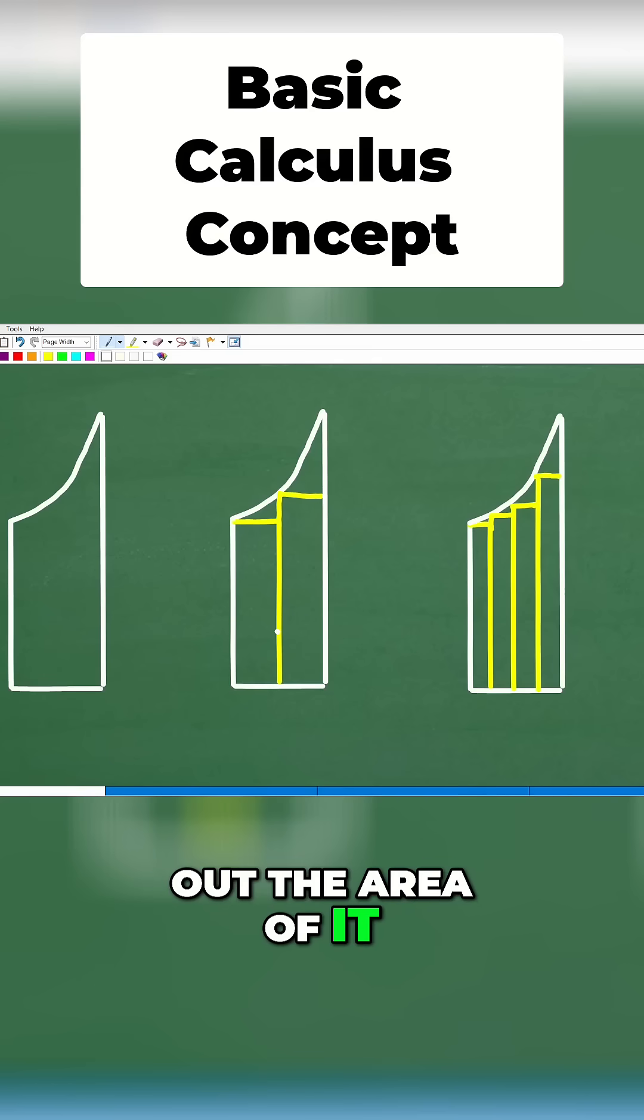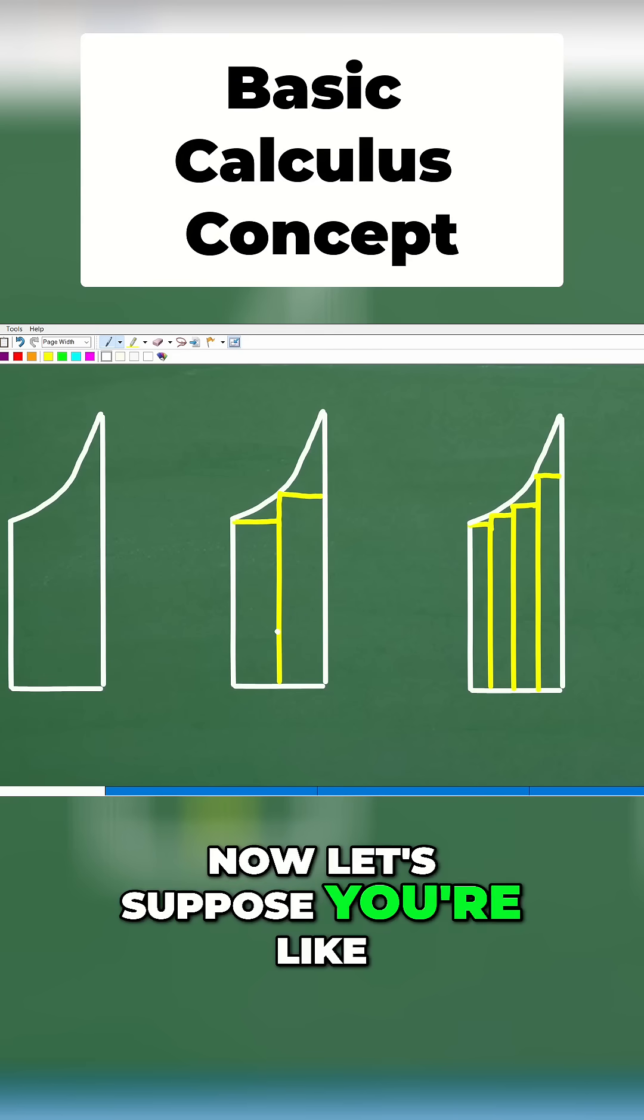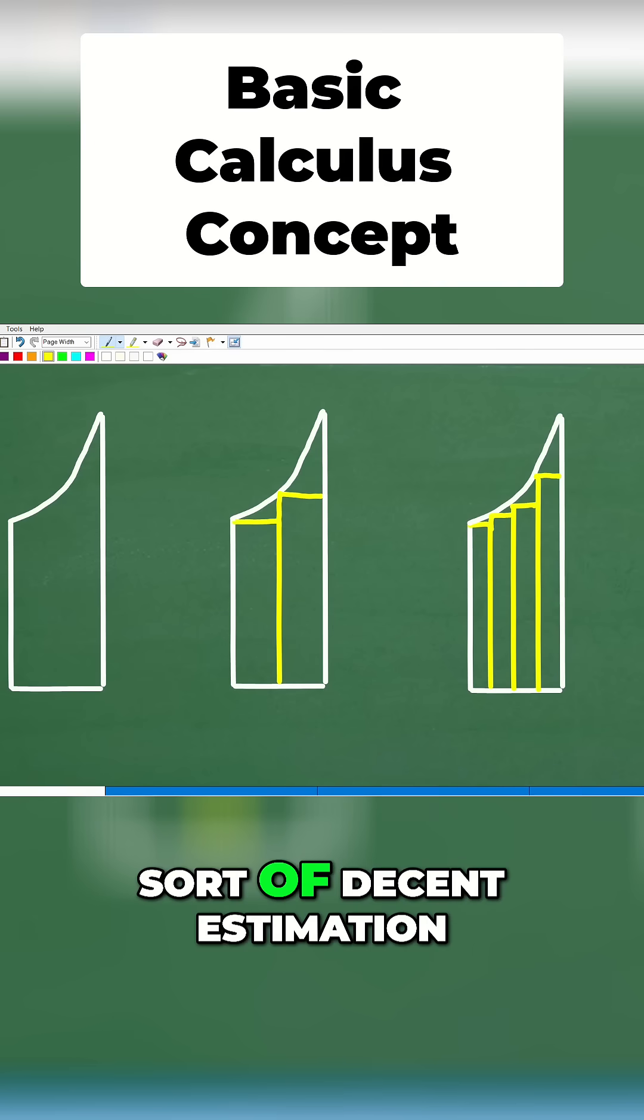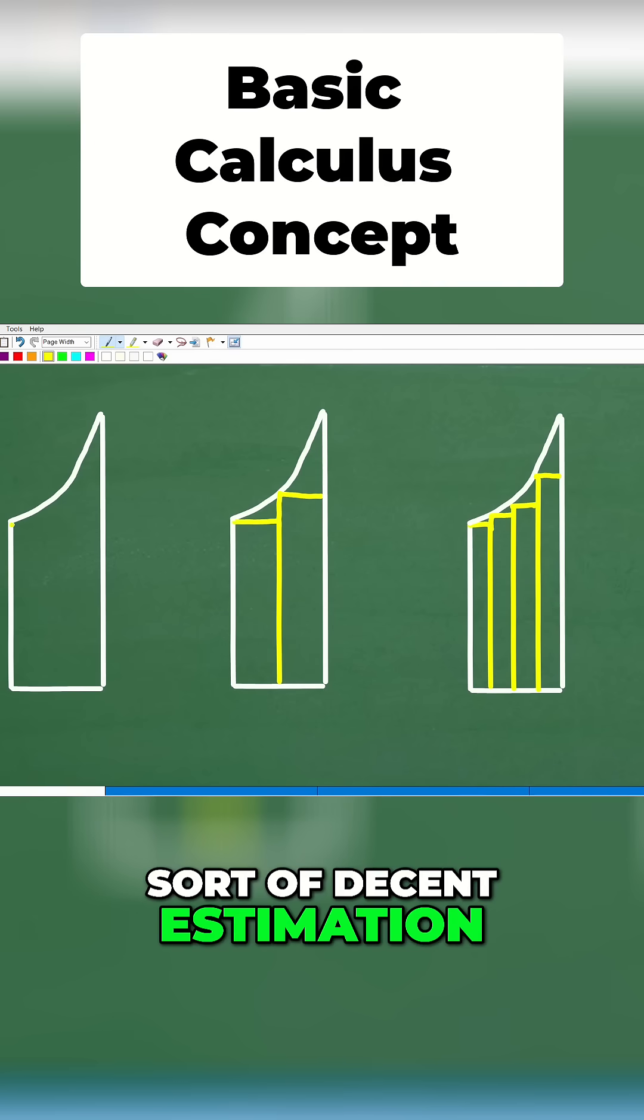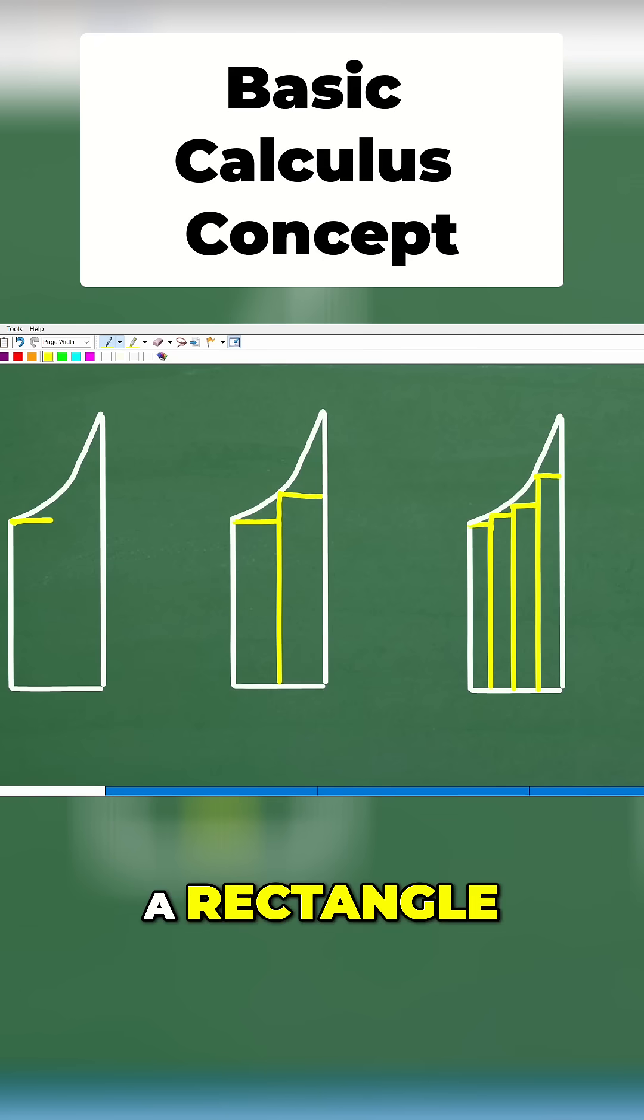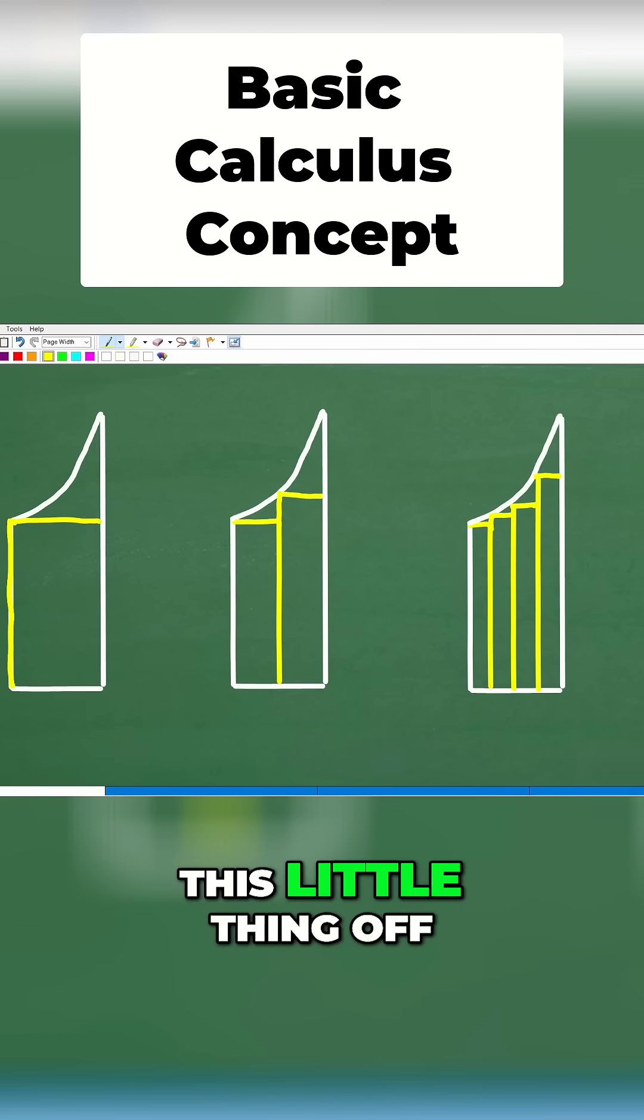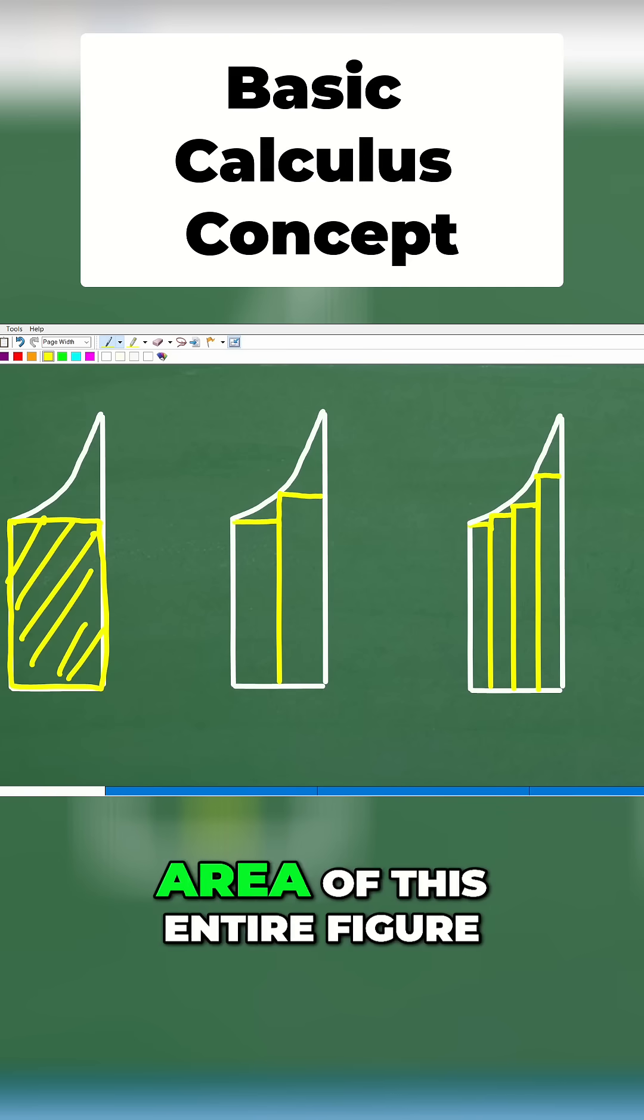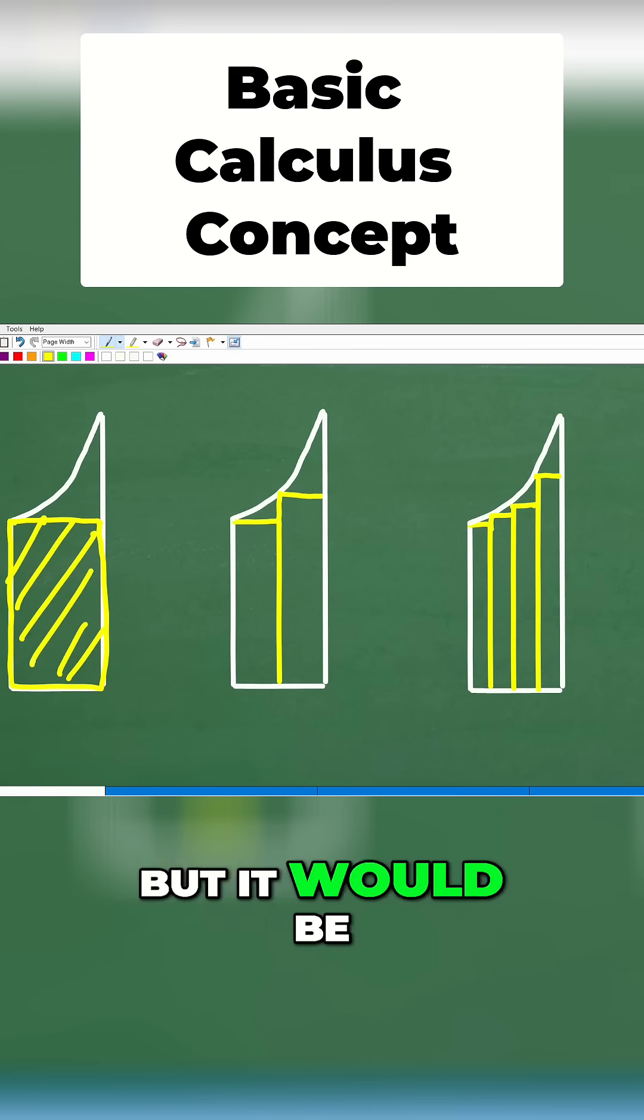We're trying to figure out the area of it. Now, let's suppose you're like, well, I don't know if I can get the exact area of this, but you might be able to get some sort of decent estimation, right? So here, this is a rectangle. How about if I just cut this little thing off right there, and I find the area of this part. Now, the area of this thing is not the area of this entire figure, but it would be a rough estimate.